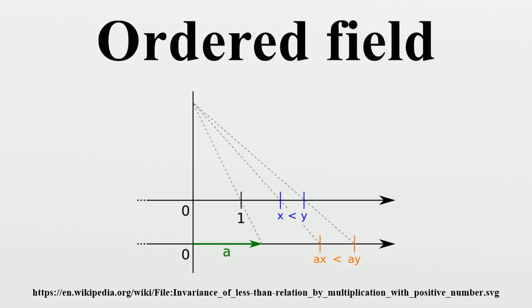1 is positive. An ordered field has characteristic 0. In particular, finite fields cannot be ordered.